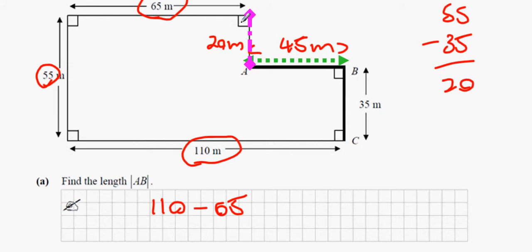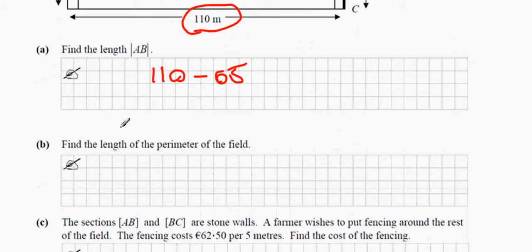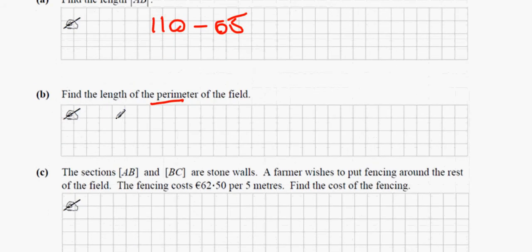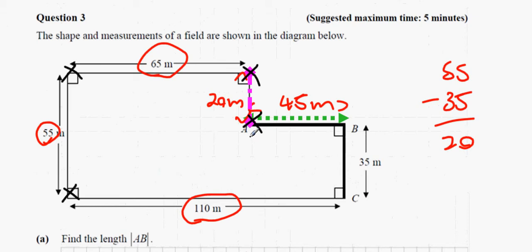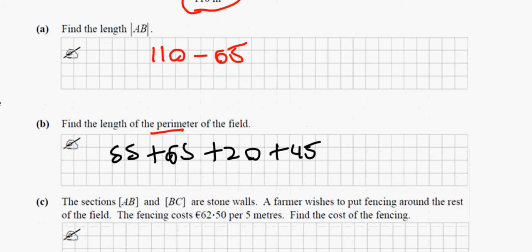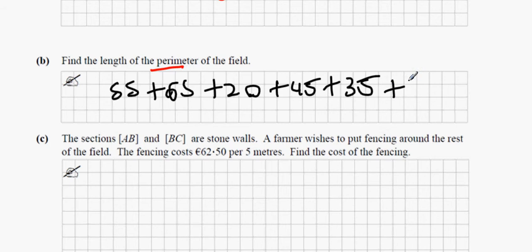Next, find the perimeter of the field. Perimeter means running around the full field — a complete lap. Add all the numbers together: 55 plus 65 plus 20 for the first three, then 45 plus 35 plus 110 for the remaining sides. The total perimeter is 330 meters.